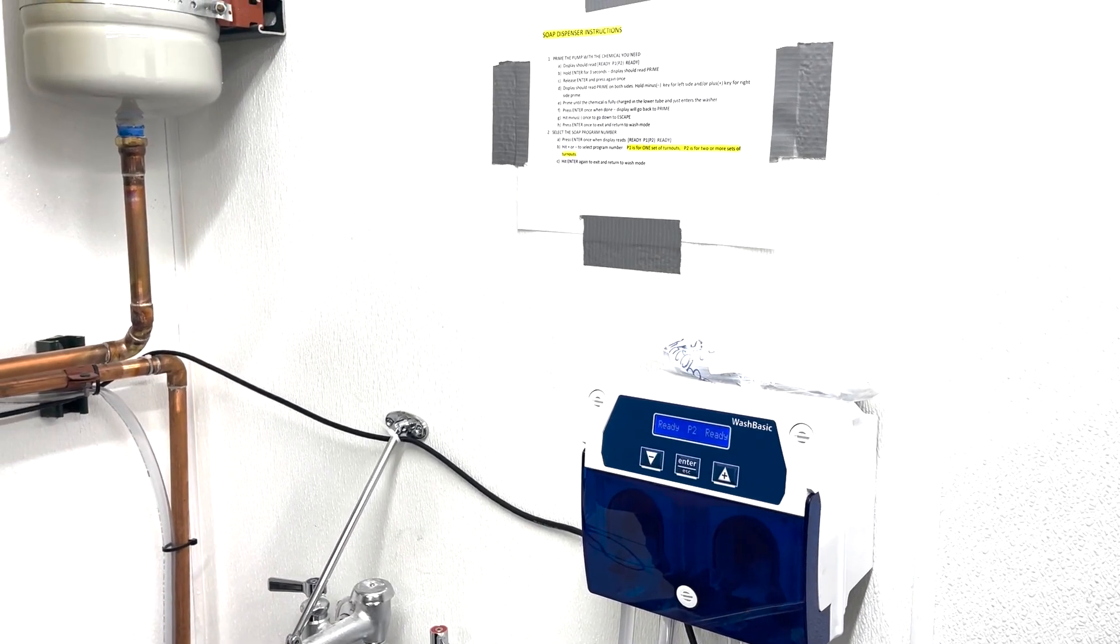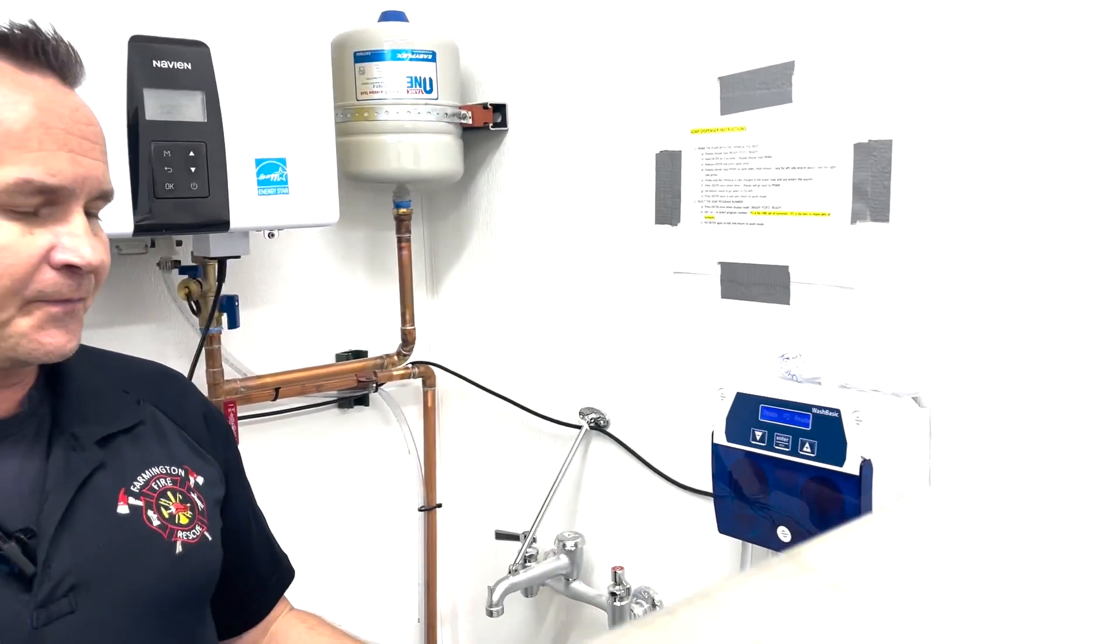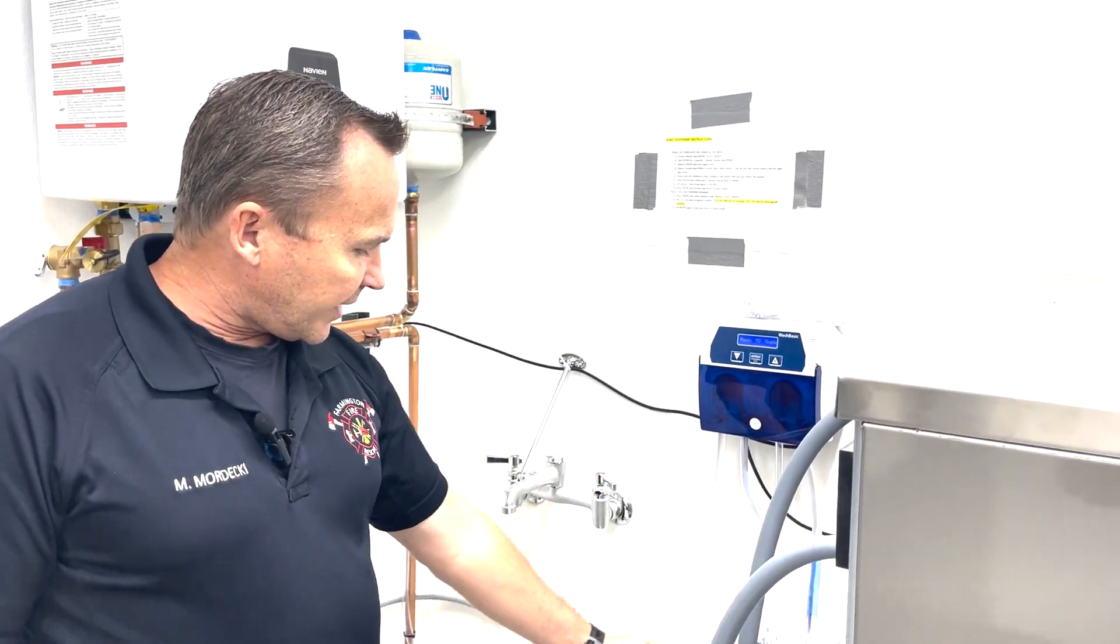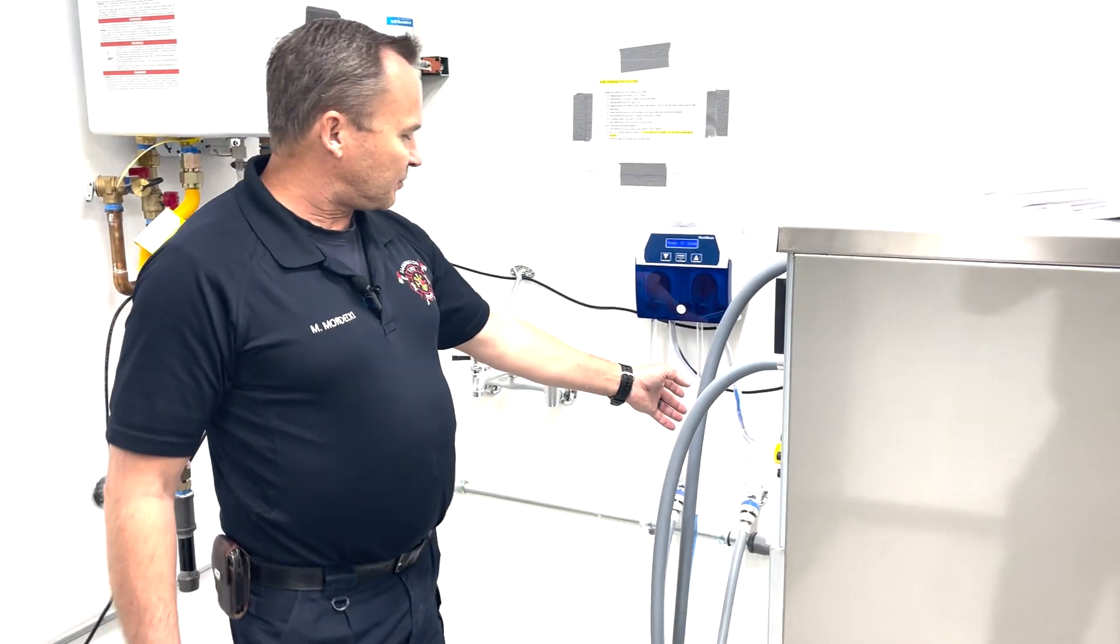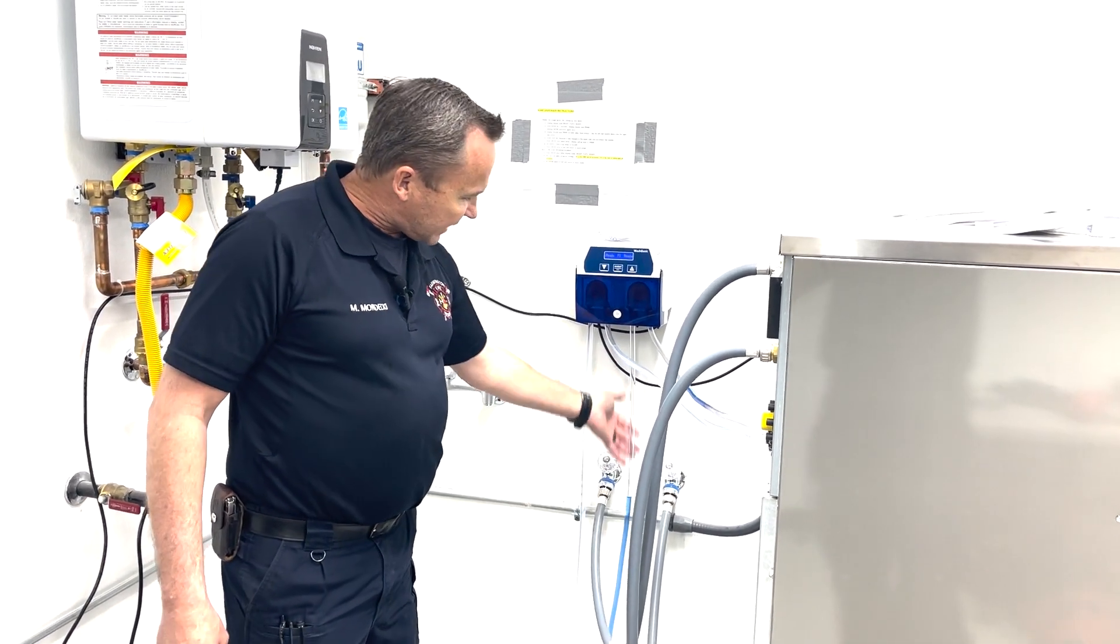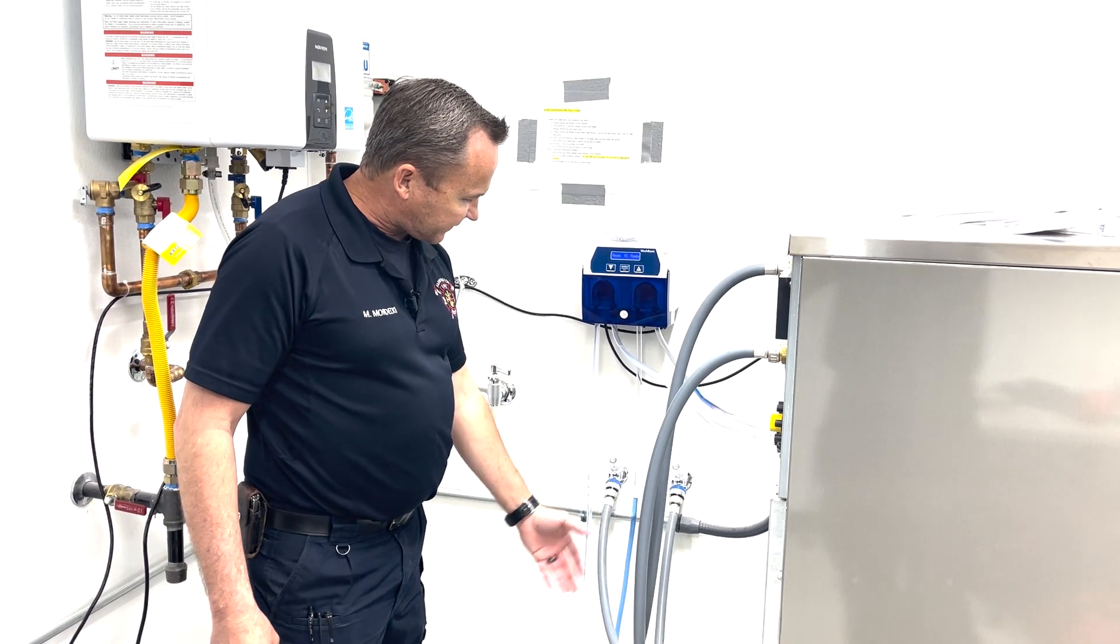Program two is for two or more sets of turnouts, and you can do up to three in these washers. What's also nice about this one is that you can prime it. The old one just ran for a certain amount of seconds. For instance, we are going to use this blue chemical, the Strike Back. It's not primed yet—you see how it's halfway up the tube. Sometimes you'll see it all the way down the tube.